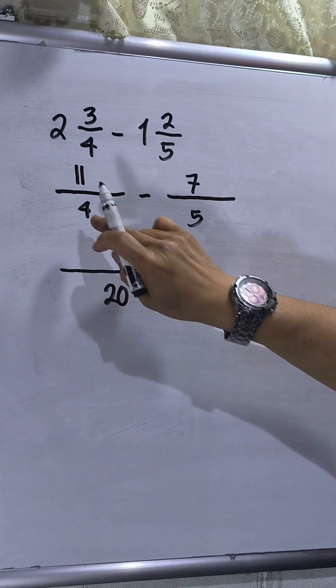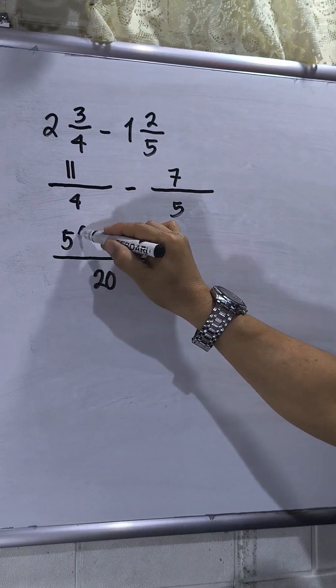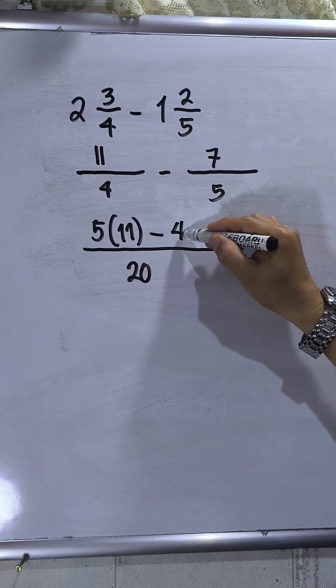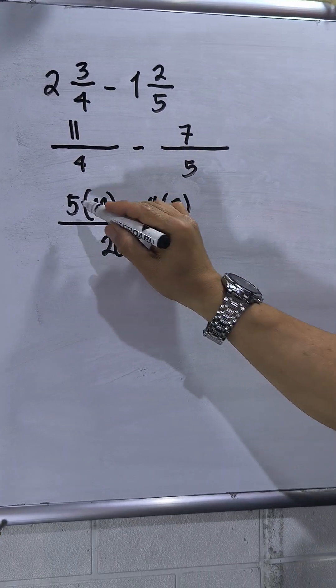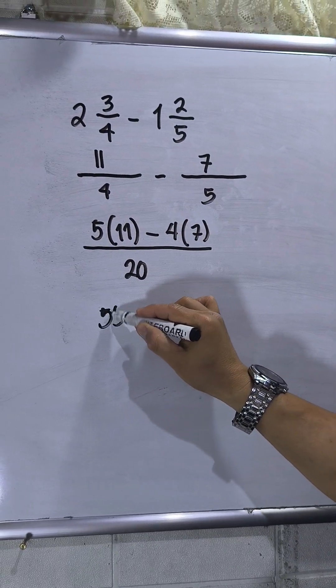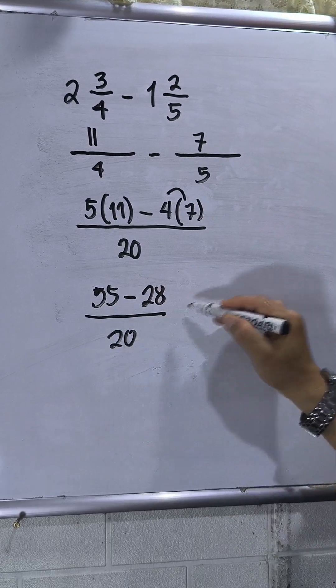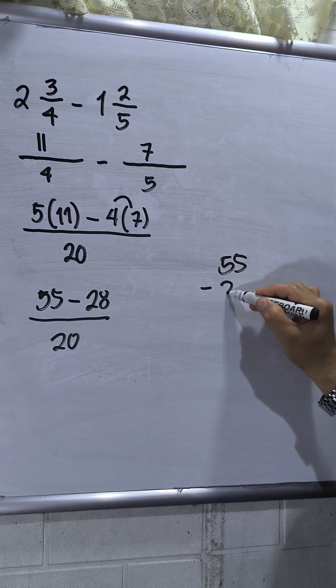Then find the LCD between 4 and 5, that will be 20. 20 divided by 4, that is 5, times 11, minus 20 divided by 5, that is 4, times 7. So 5 times 11 is 55, then minus 4 times 7 is 28. This will be over 20.